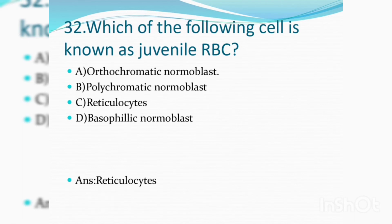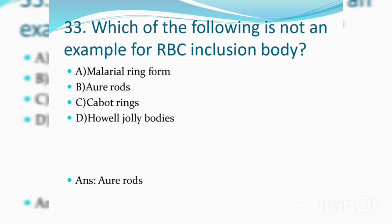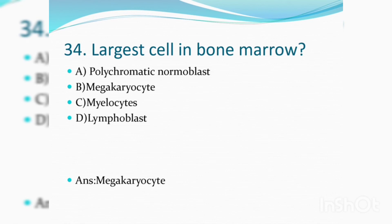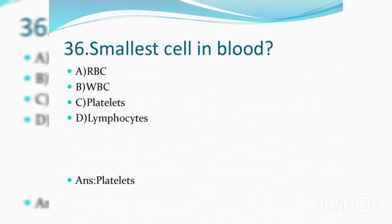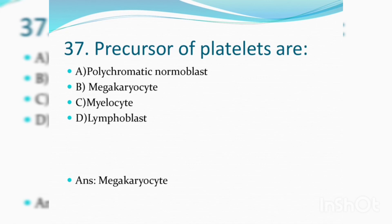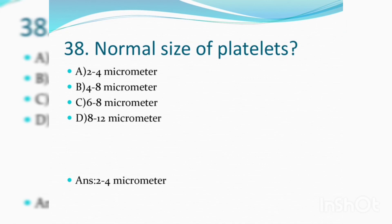Which of the following cells is known as juvenile RBC? Answer: Reticulocytes. Which of the following is not an example of an RBC inclusion body? Carbon ring or malarial ring form and Howell-Jolly body are RBC inclusion bodies. The largest cell in bone marrow is megakaryocytes. Normal size of RBC is 6 to 8 micrometres. The smallest cell in blood is platelet. Precursors of platelets are megakaryocytes. Normal size of platelet is 2 to 4 micrometres.